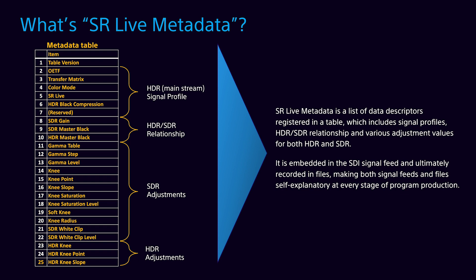The SR-Live metadata packet shown here consists of 25 parameters that describe the operational settings of the cameras, including signal profiles, HDR-SDR gain differential, as well as HDR and SDR picture adjustments. This information can make HDR and SDR data streams and files self-explanatory for the various stages of production and post-production.